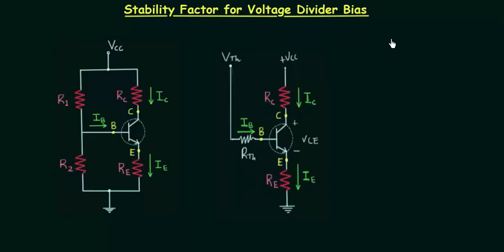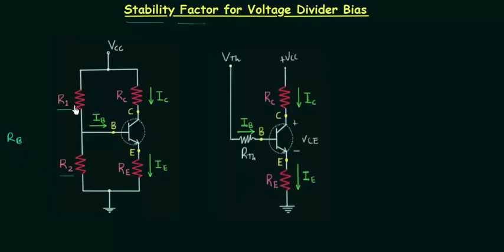Voltage divider bias is the most widely used biasing scheme. In this lecture we will find out stability factors for voltage divider configuration. In this figure you can see the voltage divider configuration in which we have two resistances R1 and R2 replacing the resistance Rb. Because of R1 and R2, voltage is divided and we call it voltage divider bias.